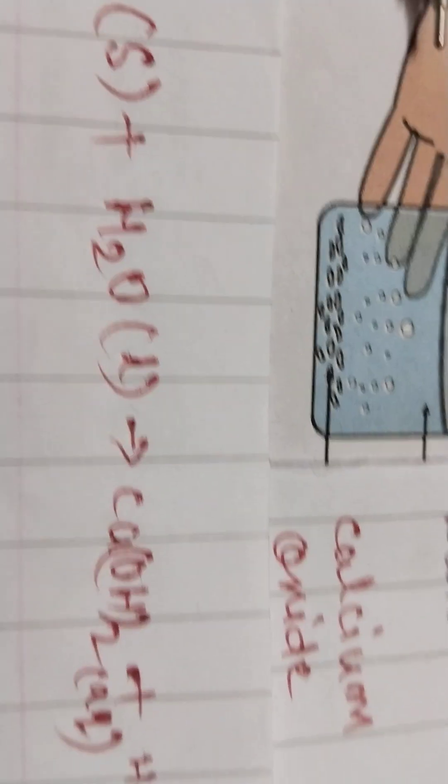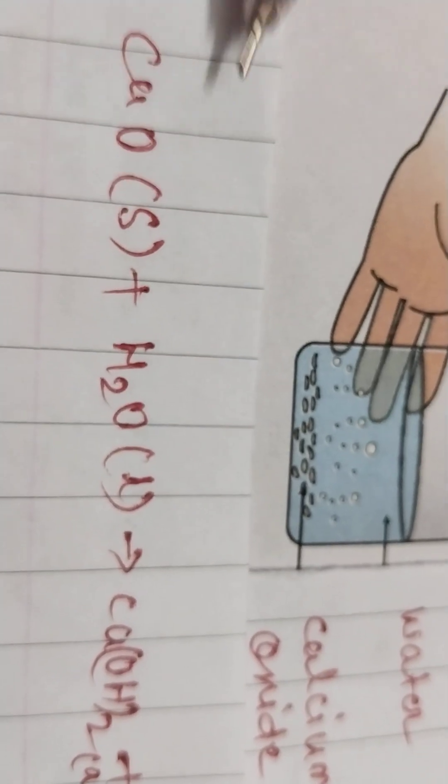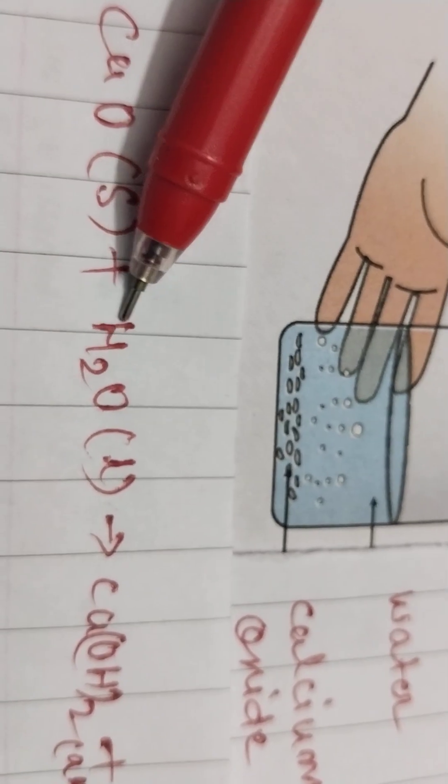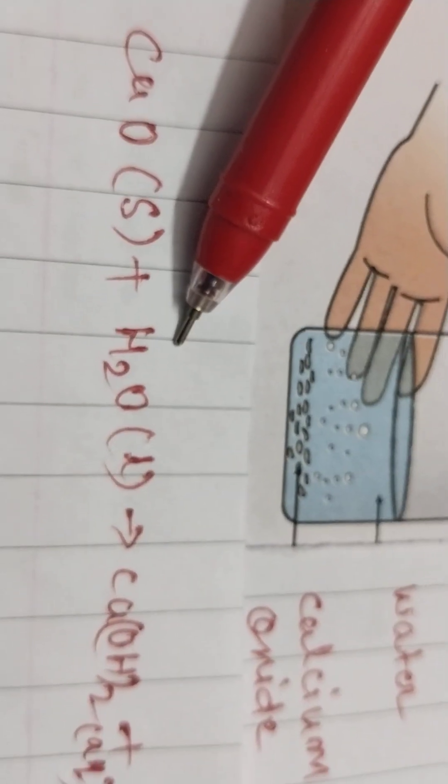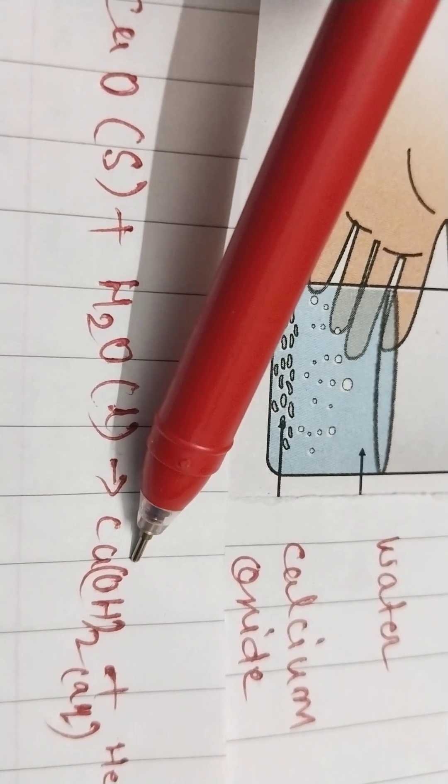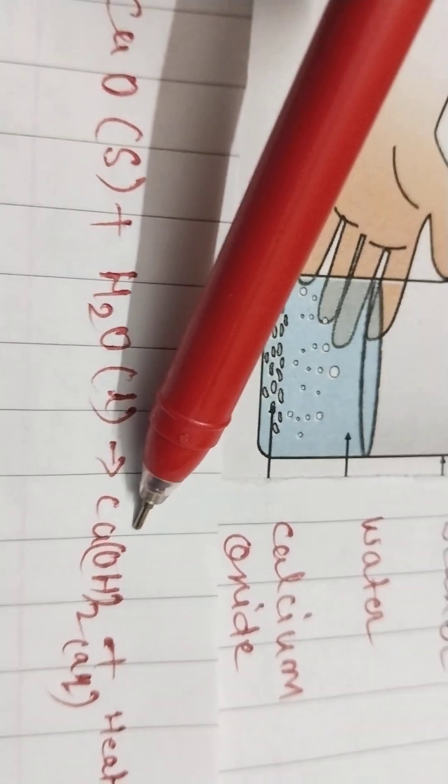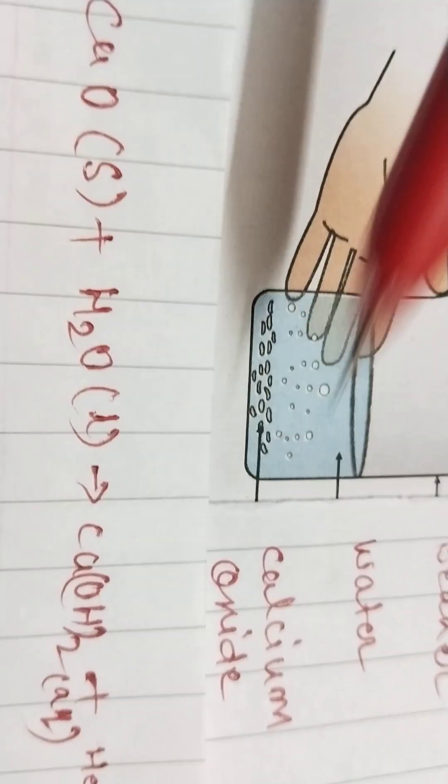The chemical equation you can see here. Calcium oxide, that is CaO, combines with water, that is H2O. And what is formed? Calcium hydroxide, which is the product, and heat is released.